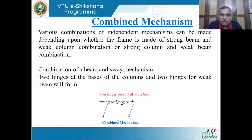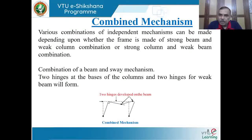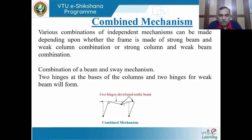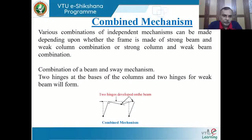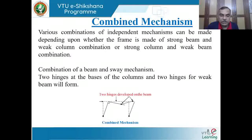For combined mechanisms in portal or gable frames, we consider combinations of independent mechanisms. The combinations depend on whether the frame has a strong beam-weak column or strong column-weak beam configuration. The beam mechanism of a portal frame combined with the sway mechanism requires careful attention to where hinge cancellation occurs.